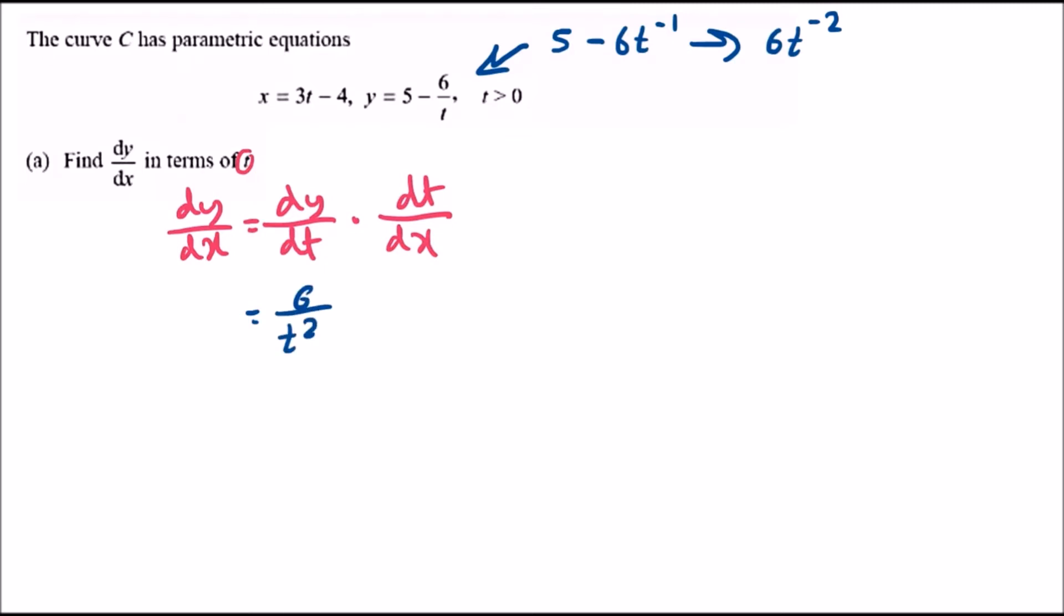Now for the other expression, we're differentiating x in terms of t. That's easy - this gives us just 3. This part gives us dx/dt which is 3, so dt/dx is 1 over 3 (it's the reciprocal). So we have 6 over t squared times 1 over 3.